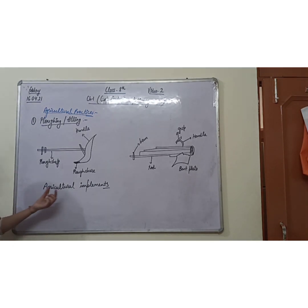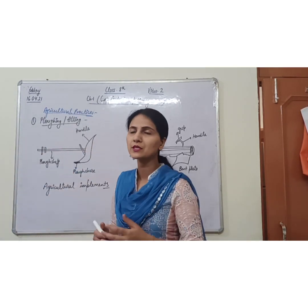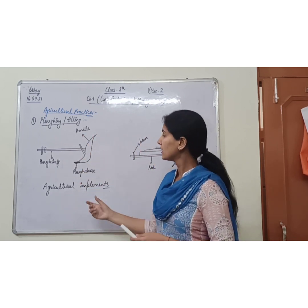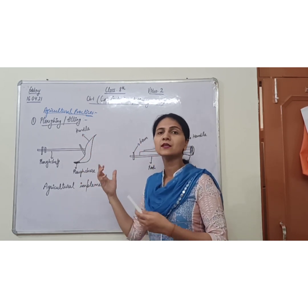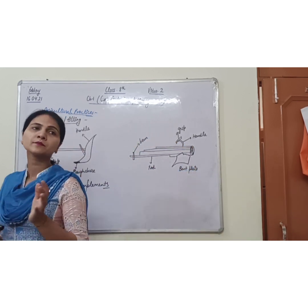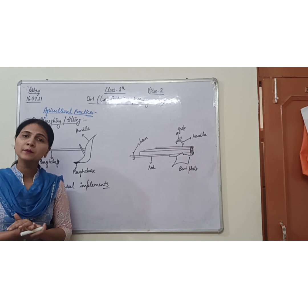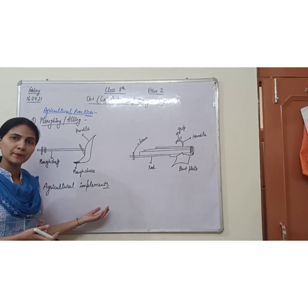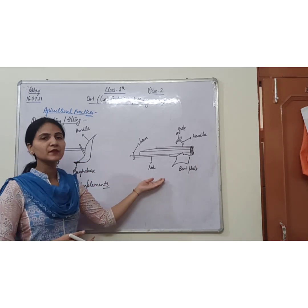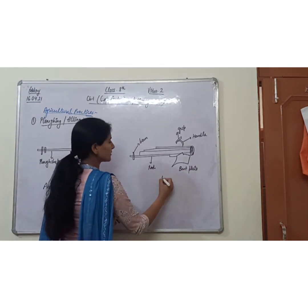Agricultural implements means the instruments we use during the complete process of agriculture. For plowing purposes, we use three main implements: the first one is the plow, the second one is the hoe, and the third one is the cultivator.